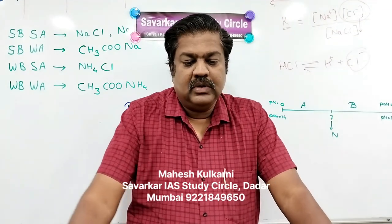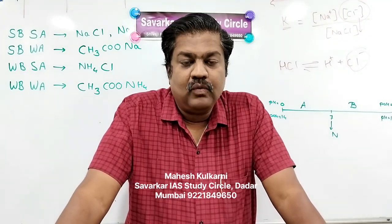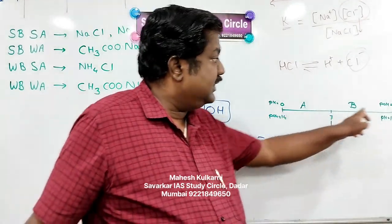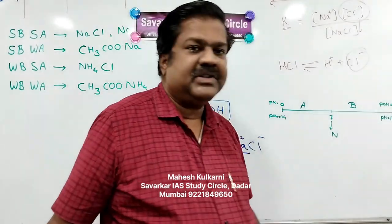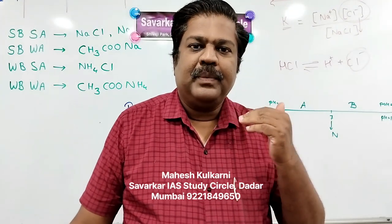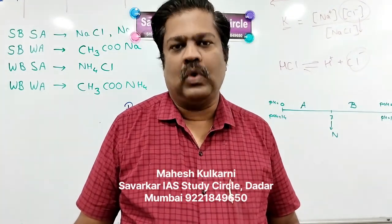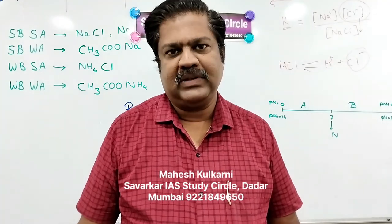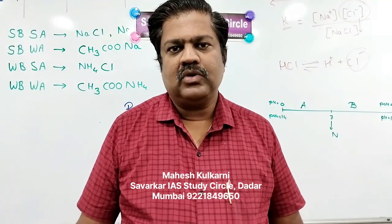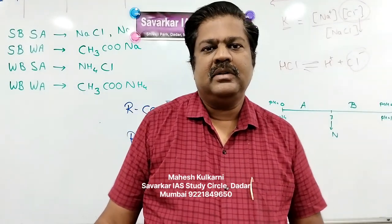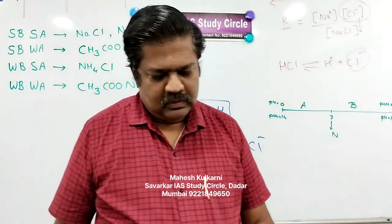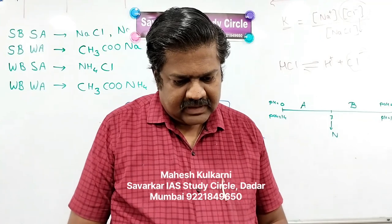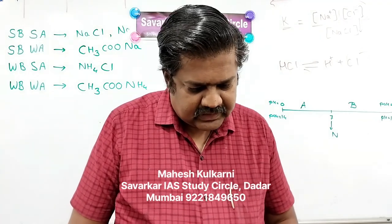Sixth question: pH plus pOH is equal to what? You are aware of the pH scale. pH plus pOH is equal to 14, because the ionic product of water is 10 raised to minus 14. On that basis it is calculated that pH plus pOH equals 14. So the answer is C.